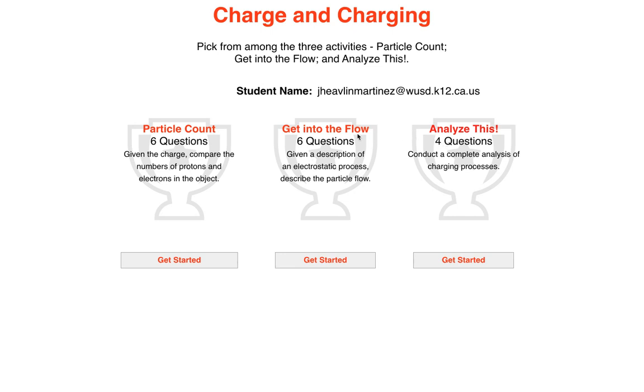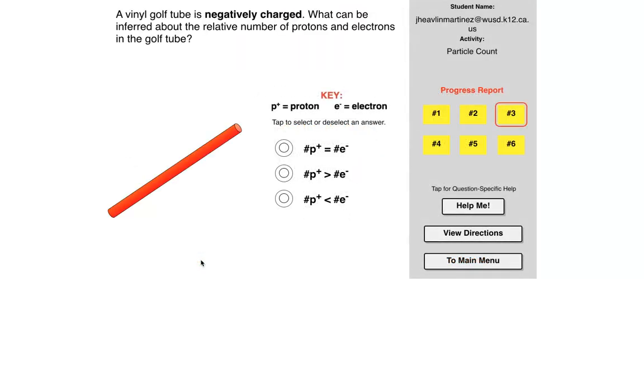This concept builder centers around the balance of protons to electrons and how that affects charge. If you remember back to chemistry or eighth grade physical science, all objects contain protons and electrons. Protons have a positive charge and electrons have a negative charge, and they have the same quantity of charge.